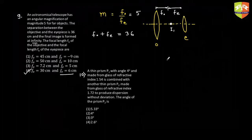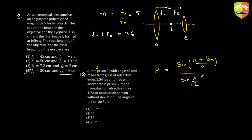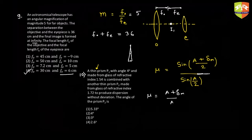Question 10 talks about deviation from a prism, and it states it is a thin prism. We know the refractive index formula is μ = sin((A + δm)/2) / sin(A/2). If the prism is thin, angle A is very small, so we can approximate sine of the angle to the angle itself. Thus μ becomes (A + δm) / A.